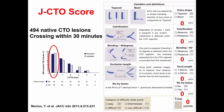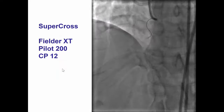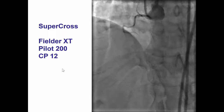Interestingly, the lesion qualifies as a simple lesion — a JCTO score of 0 and a Progress CTO score of 0 — suggesting high success rates and low complication rates. However, this may not always be true, as you will see in the subsequent slides.